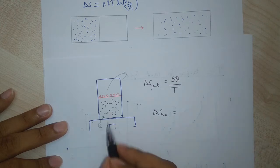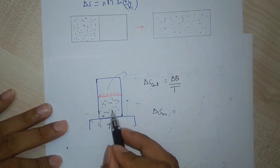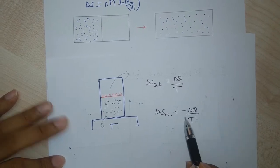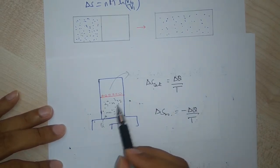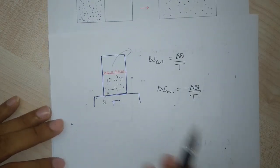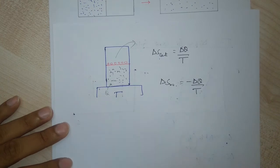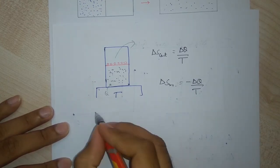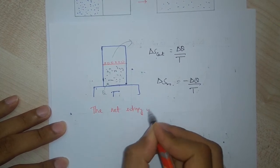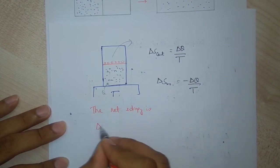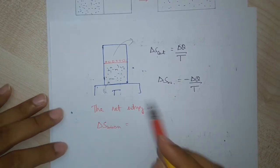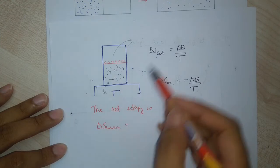We also notice a change in entropy of the reservoir. The change in entropy of the reservoir equals minus ΔQ/T — negative because it is giving out heat, while the container's entropy change is positive because it is taking in heat. The net entropy is the entropy of the universe, meaning the full environment.